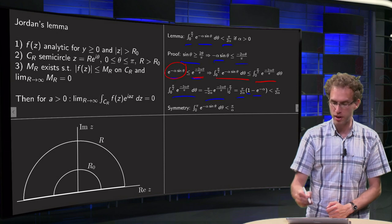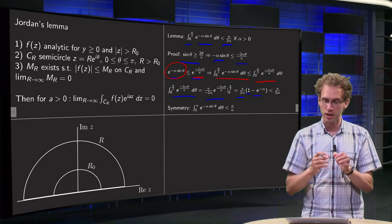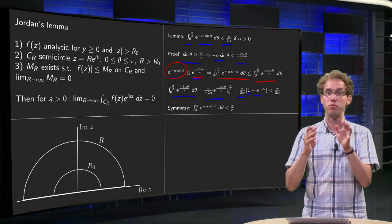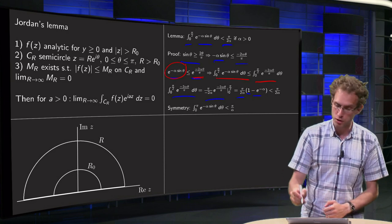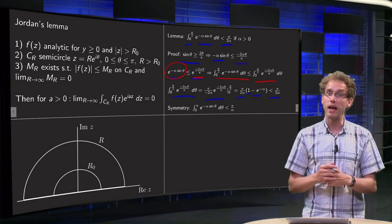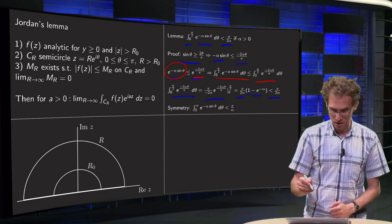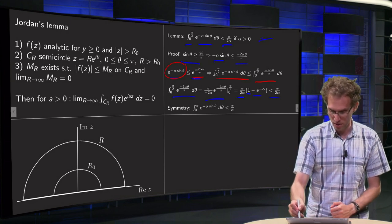And upper boundary. So, we get π over 2α times 1 minus a positive number, which is smaller than π over 2α. And then you have the lemma.